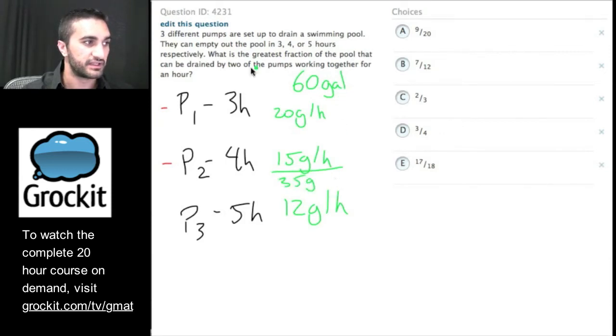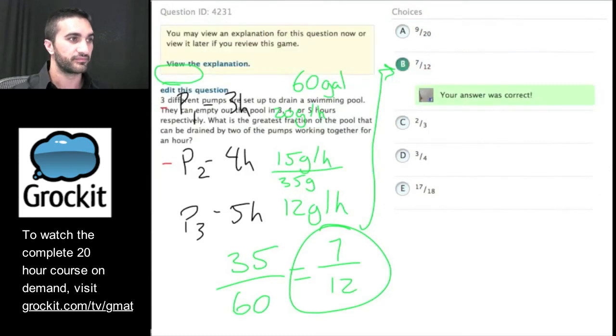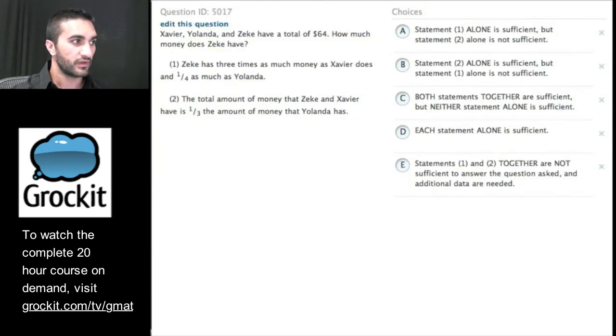And they want to know what sort of fraction that is. So 35 of the 60 gallons can be removed. And if we simplify that, divide both by five, we get 7 twelfths. So on this question, we dissected it. We re-represented the information a little bit more manageably. We picked a value. So this is one of the things we do on word problems is sometimes we have to pick numbers because they don't give us the actual discrete number to work with. And then we figured out the rates for the three of them. We added the rates of the two fastest. And that gave us the fraction that we could pull out in an hour, I think. Let's see. Nice. Great.